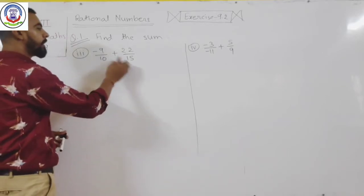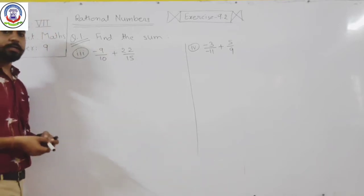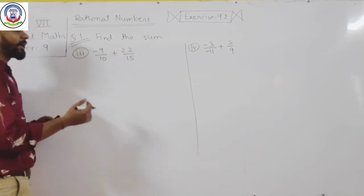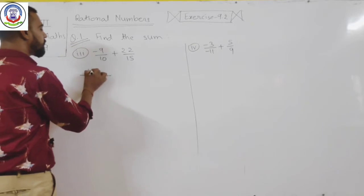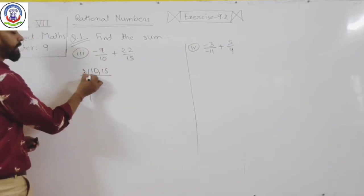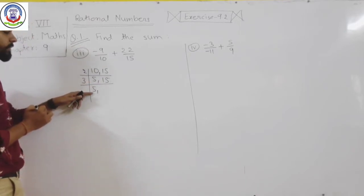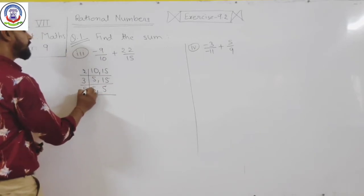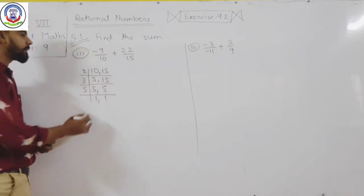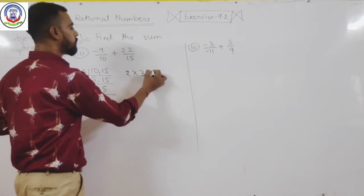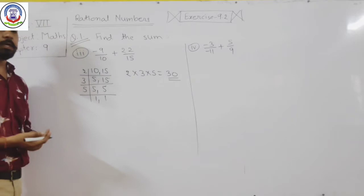For that, the denominators should be equal — 10 and 15 should be equal. Rather than directly multiplying, it is better to find the LCM of 10 and 15. Divide by 2: we get 5 and 15. Then divide by 3: 5 remains. Then divide by 5 and you get 1. Keep dividing by prime numbers until you get 1. So the factors are 2 × 3 × 5, and multiplication of these gives LCM = 30. So 30 is the LCM of 10 and 15.